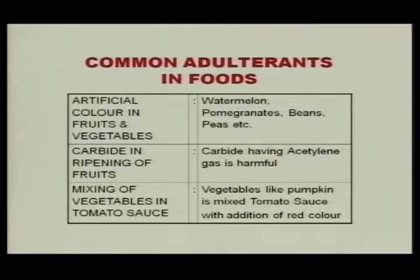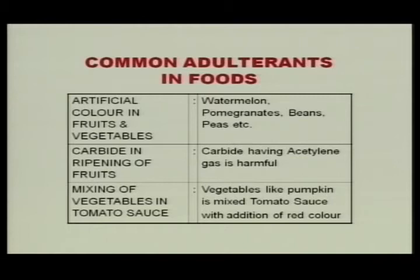In tomato sauce, cheaper vegetables like pumpkin are mixed during preparation along with addition of color so that it cannot be detected. These are the common adulterants found in fresh fruits, vegetables, spices, milk and other products. Now let us see what are the simple methods of detection of this adulteration.